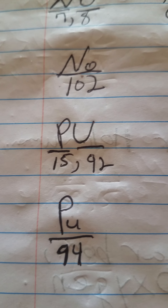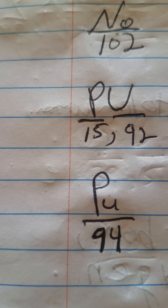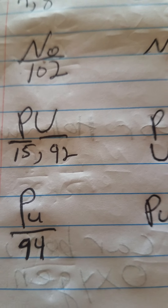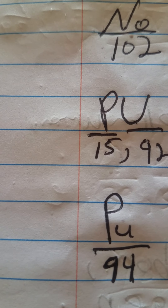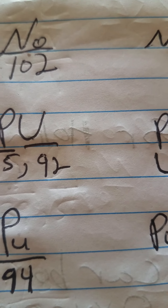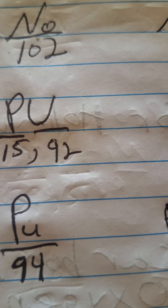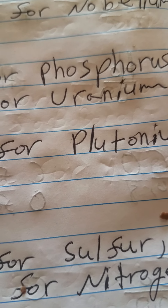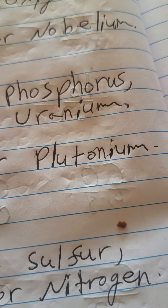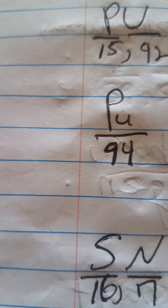You've got a capital P and a capital U. Capital P is for phosphorus with atomic number 15, and capital U is for uranium with atomic number 92. But if you take a capital P and put a small U next to it, now you've got plutonium — spelled P-L-U-T-O-N-I-U-M — with the atomic number of 94.